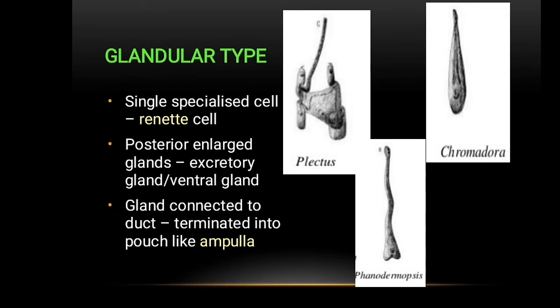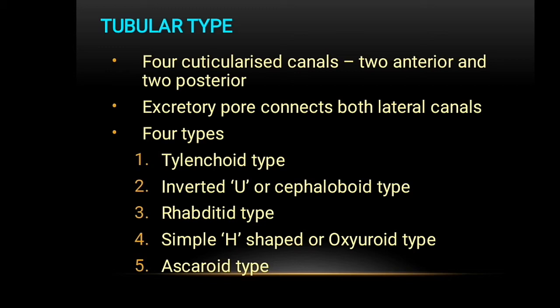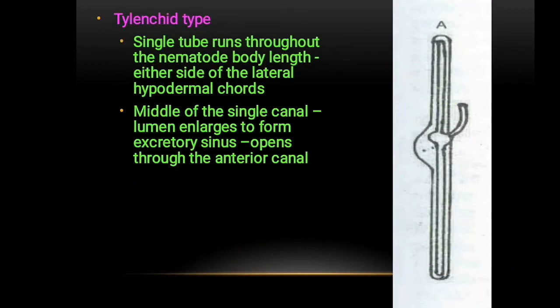In Enoplia, such as Phanodermopsis, the single cell is lobed. In Plectus, the duct is very elongated. Regarding the tubular type of excretory system, it consists of four cuticularized canals — two anterior and two posterior. The excretory pore connects both lateral canals. The modifications include: the tylenchoid or asymmetrical type, the inverted U or cephaloboid type, the rhabditoid type, and the simple H-shape or oxyuroid type, and the ascaroid type.